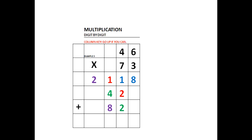Now all we have to do is add the numbers up to find the final product. Our first sum is 8, our second sum is 5, our third sum is 13 — there's the 3, there's the 1 — and the final sum is 3.